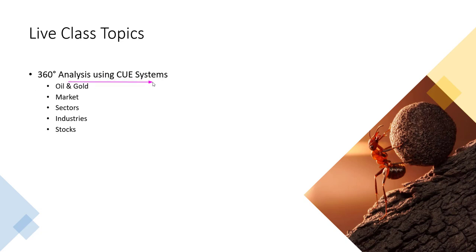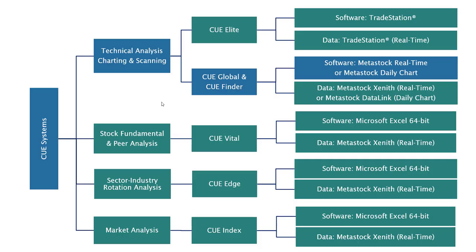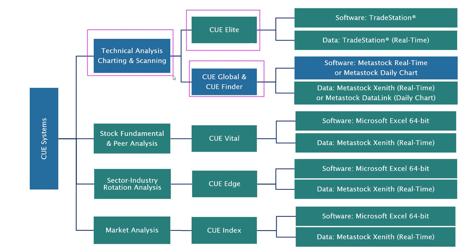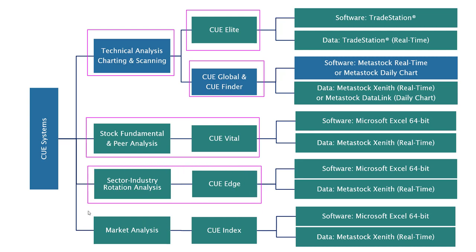In today's topics I will apply the Q 360 degrees analysis technique to look at oil and gold, then market sector rotation, industry rotation, and stock fundamental and technical analysis for trading opportunities. I use Q Elite on TradeStation, Q Global and Q Finder on MetaStock for charting and scanning, Q Vital for sector and industry rotation analysis, Q Edge for industry scorecard, and Q Index for market level index analysis. All these systems can run in 100% real-time mode.